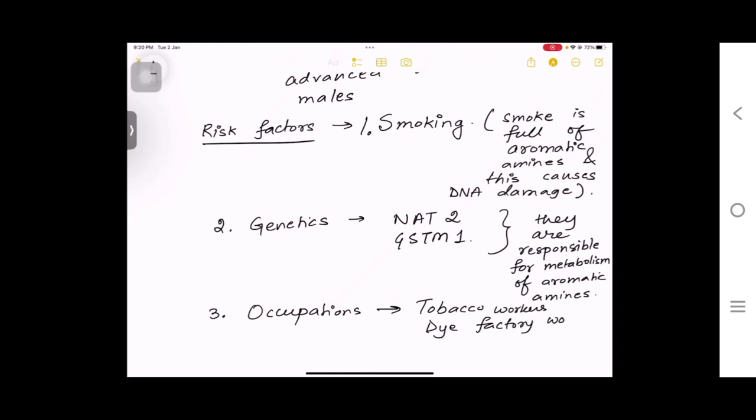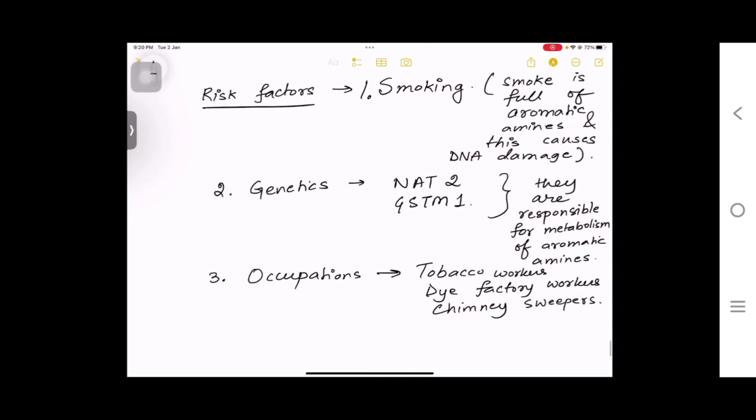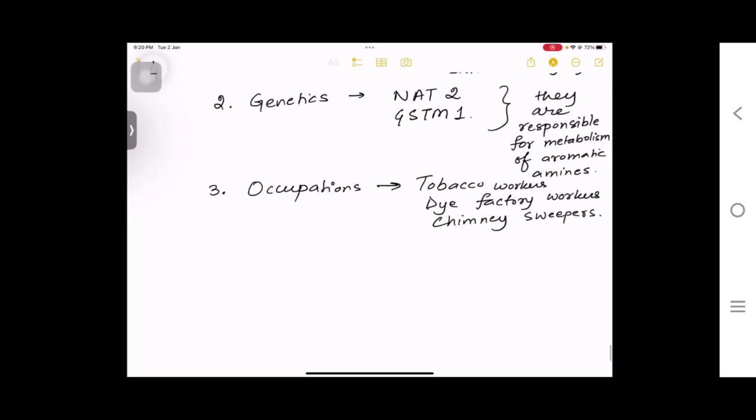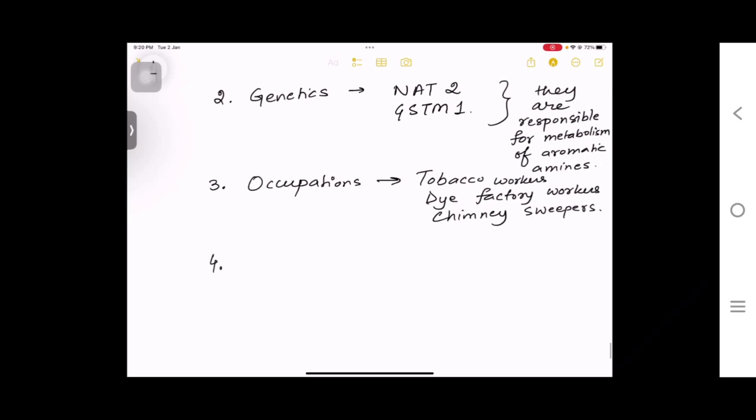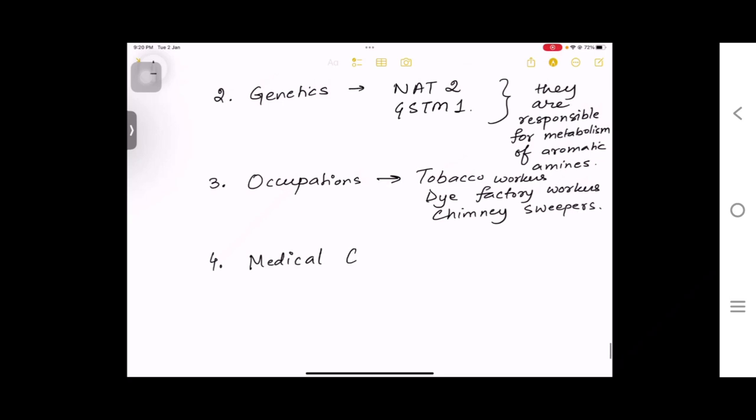Cancer is always associated with some genetic history. Here the genes that are responsible are NAT2 and GSTM1. These are responsible for the metabolism of aromatic amines. Third is occupation, wherein you have tobacco workers, dye factory workers, and chimney workers. The particles that come out from chimneys or dye factories will cause mutation in the DNA and lead to cancer.